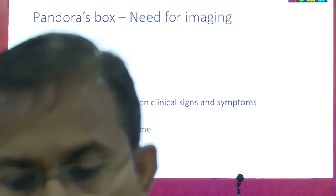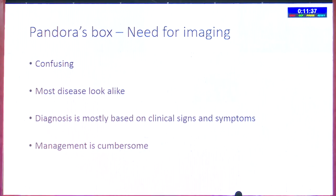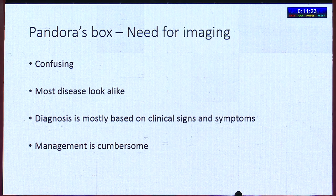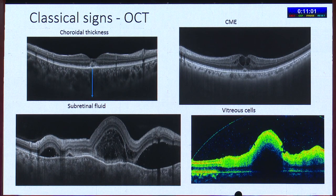Dr. Nasik presents on imaging in uveitis. Uveitis is often confusing — it is easy to label it as anterior or posterior uveitis but difficult to determine the cause. History and clinical examination remain the most important tools and always overpowers investigations. Imaging is needed for diagnosis confirmation, prognostication, and treatment guidance. Uveitis management is complex — some patients do not respond to steroids, some develop complications, and immunosuppressants and biologicals have changed the management scenario. Imaging modalities discussed include OCT, fluorescein angiography, ICG angiography, fundus autofluorescence, and OCTA.